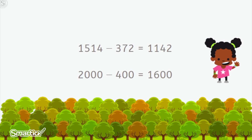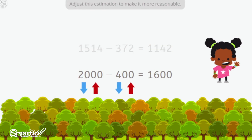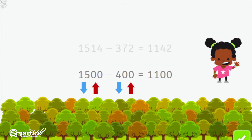Zoe's calculation was very easy but too different from the actual result. Help Zoe adjust her estimation. Our first number is 1,514 — I'm going to round down to 1,500, because 14 is closer to 1 than to 99. As for 372, I'm going to round up to 400, because 72 is closer to 99 than to 1. That gives an estimated answer of 1,100. By rounding to the hundreds, we get 1,500 minus 400 equals 1,100.